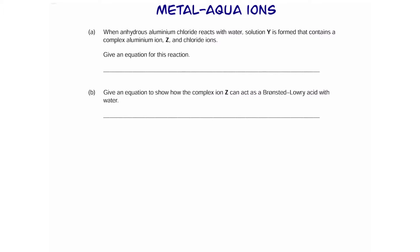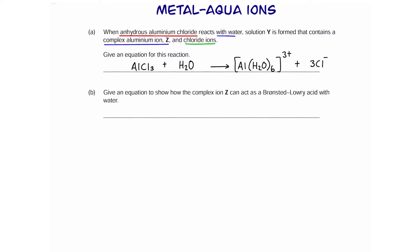When anhydrous aluminium chloride (AlCl3) reacts with water, we form solution Y, which contains a complex ion, and we produce three chloride ions. Remember, hexa-aqua ions are formed when you put a salt of transition metals in water, and also some other metals like aluminium. These are the state symbols.